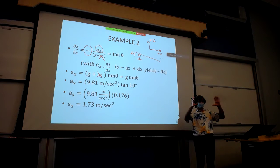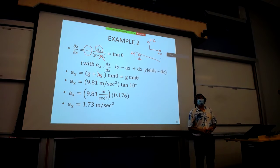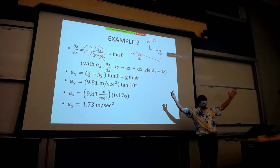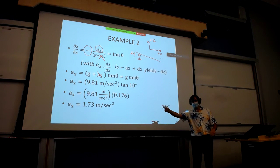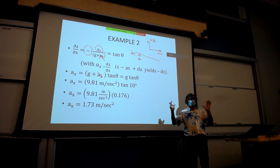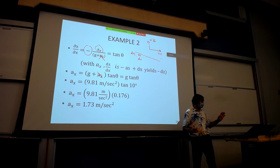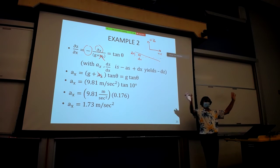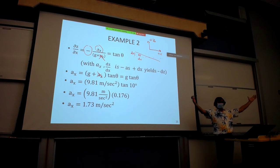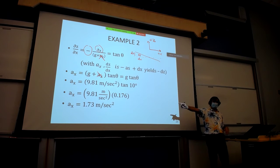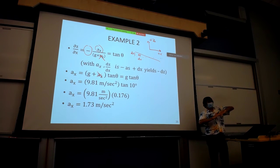If you have this tank of water — it doesn't matter if the tank is the size of this room or just a little cup of coffee. That equation has no physical dimensions of length, width, or height in it. Whatever that finite volume is, you accelerate it at 1.73 m/s² in the positive x direction, and you're going to get a slope of ten degrees for that fluid volume.